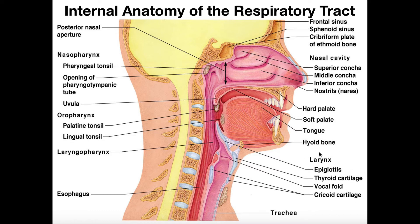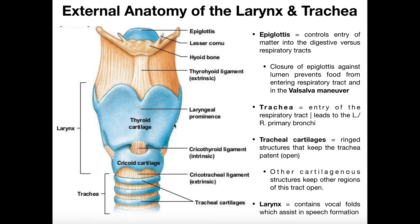Now let's look at the larynx from an anterior view — looking directly in front of the person at their neck. Pretty much all of this at the top is the larynx; the trachea is of course below that. The trachea is also called the windpipe, so it has the shape of a pipe. The first structure to discuss, which is slightly above the larynx region but still important, is called the epiglottis.